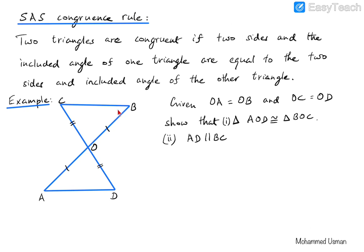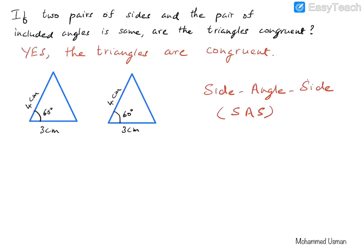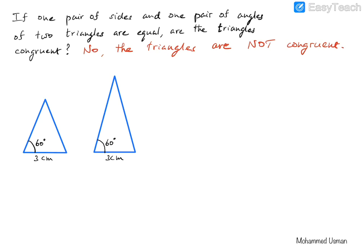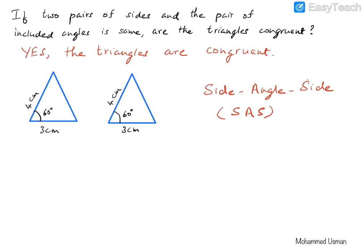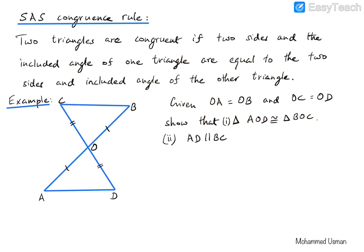We have two triangles here, one being the flipped version of the other — like upside down. Given certain conditions, we are asked to prove that triangles OCB and OAD are congruent. When two triangles are congruent, we write it using the congruence symbol — a tilde above an equal sign — so triangle A is congruent to triangle B.